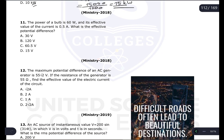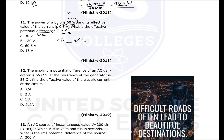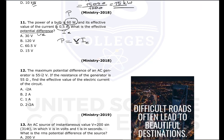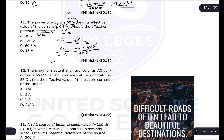Question number eleven: the power of a bulb is 60 watts, and the effective value of the current is 0.5 ampere. What is the effective potential difference? Using P = V × I, we get 60 = V × 0.5. Dividing both sides by 0.5 gives effective potential difference = 120 volts. B is the correct answer.